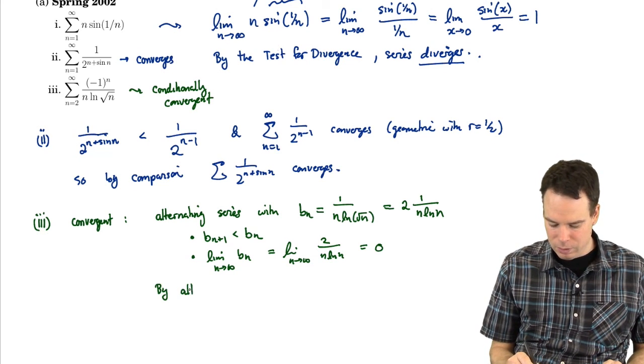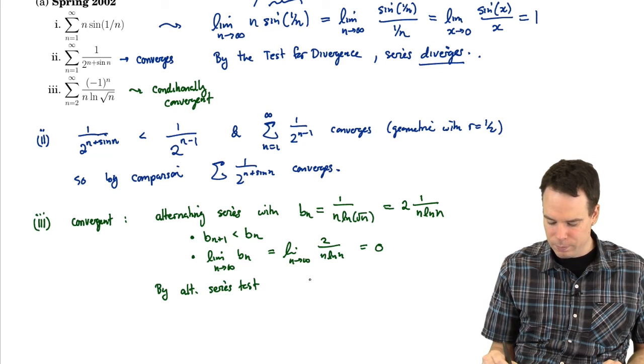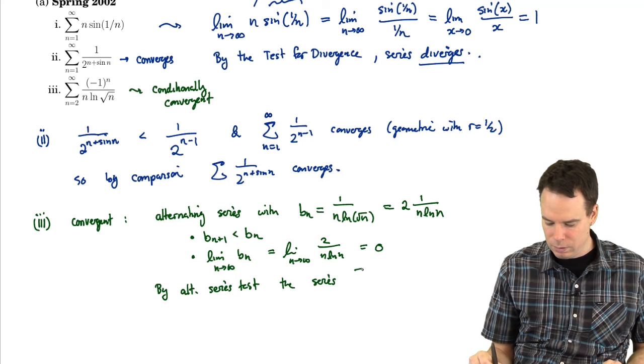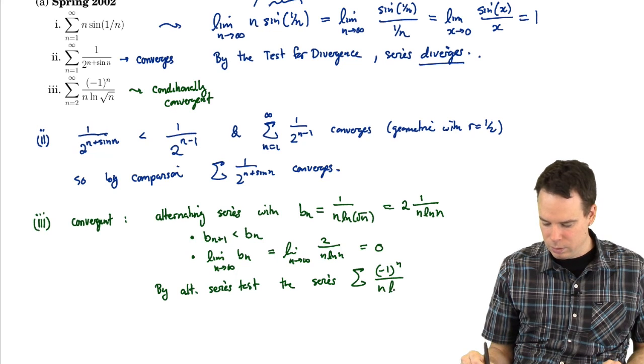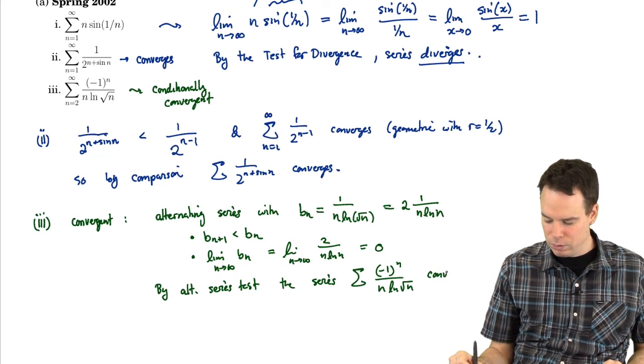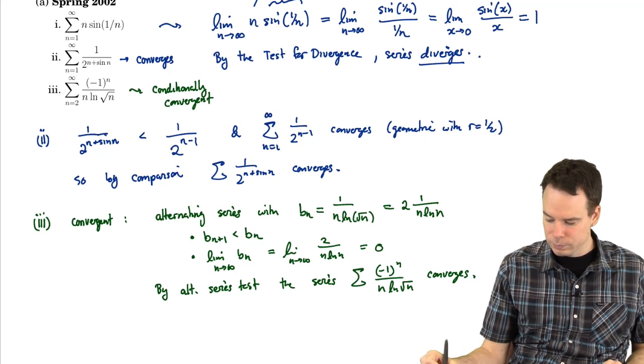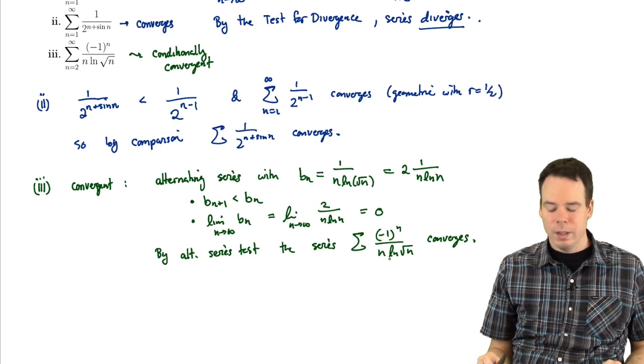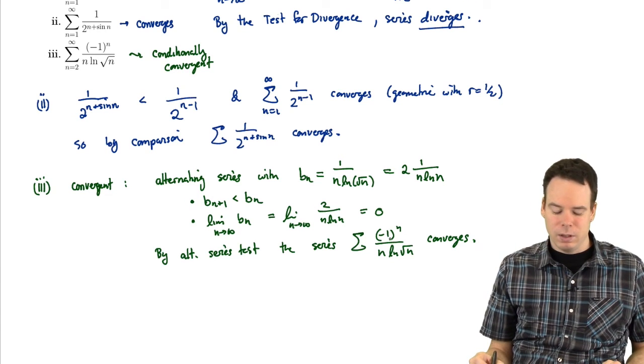So both of the conditions that I need to apply the alternating series test apply here. They both are satisfied. So what that means is, by the alternating series test, the series, negative 1 to the n over n log root n converges. Okay, so the alternating series test tells us it converges. That required that these negative signs be here.